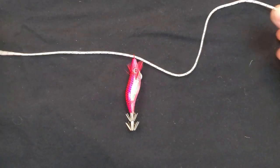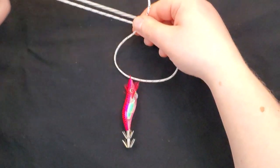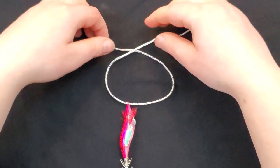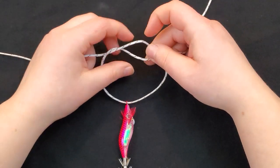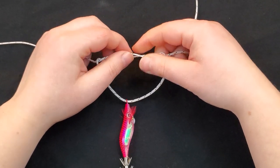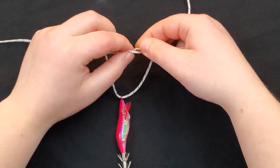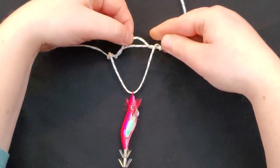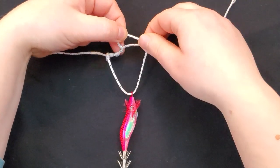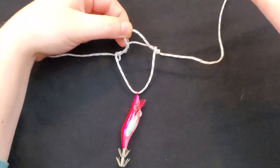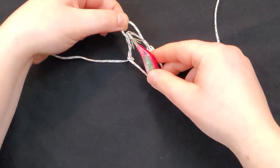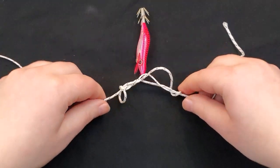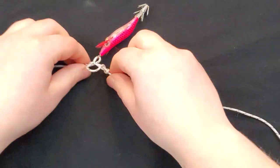So you just overlap like that, and then we're going to tuck the line under several times. That leaves us with a nice loop right there, and we're going to put our jig through the loop, and then you just pull the ends tight.